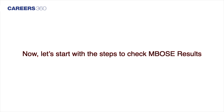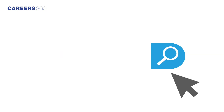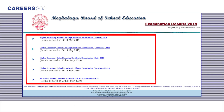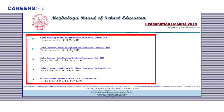Now let's start with the steps to check MBOSE results. First of all, visit the official website at megresults.nic.in. On the home page, Class 10 students need to tap the SSLC result link, while Class 12 students need to select the HSLC result link as per their stream. It will lead to a result window where students need to enter their roll number.